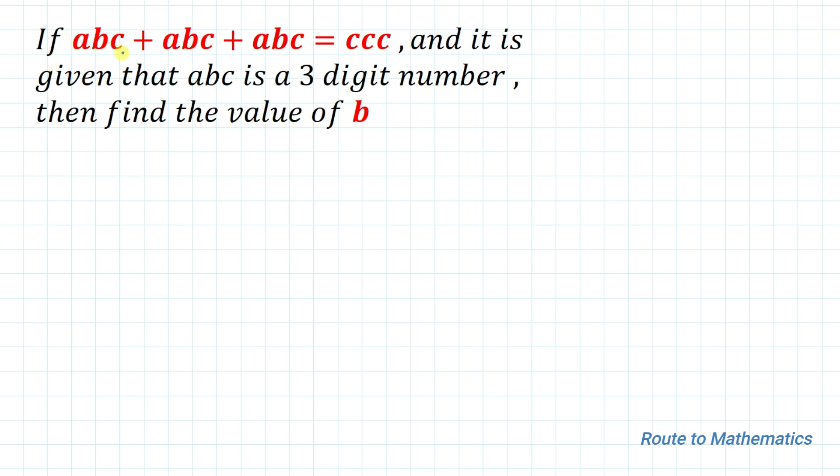The given question is: if ABC plus ABC plus ABC equals CCC, and it is given that ABC is a 3-digit number, then find the value of B. Here we have an equation where ABC is a 3-digit number and we are asked to find the second digit B.